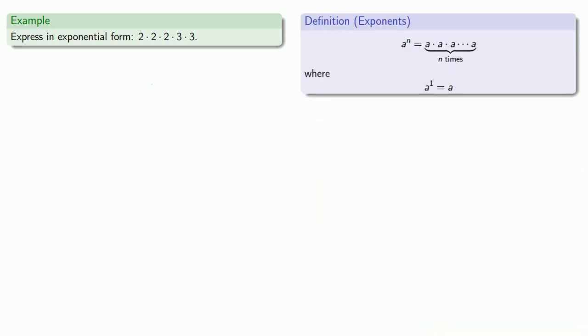And the thing to recognize here is that we can only reduce something to exponential form if we're multiplying the same things together. So these 2s, there's 3 of them, so we can rewrite these as 2 to power 3.